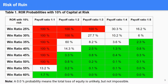Let's take a look at some data on Risk of Ruin and see how these components affect it, and why the percentage of capital at risk is so important to define precisely based on your win ratio and payoff ratio. In Table 1 you can see the Risk of Ruin probabilities with 10% of capital at risk. In the first column you can see your win ratio, and across the columns you have different payoff ratios. For example, if your win ratio is 40% and your payoff ratio is one to one, then your Risk of Ruin is 100%.